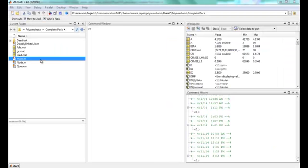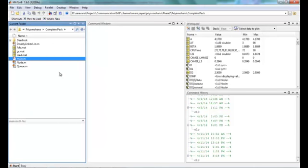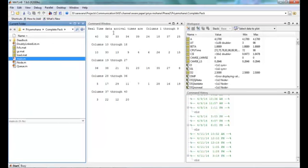Open the source code folder and run the main.m file. Here we are going to display the data transmitted in each queue.